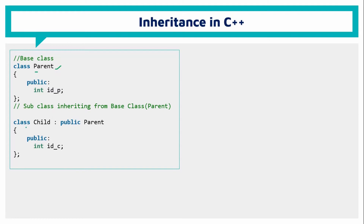We name the child class and inherit the parent class. To inherit, use a colon, then specify the access mode as public, then write the base class name — which is parent.